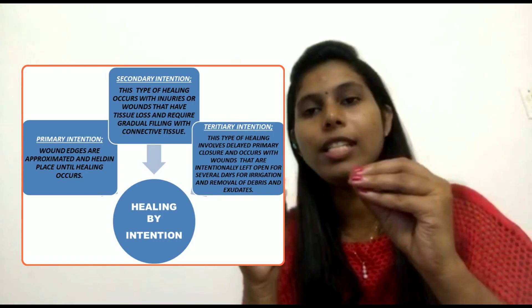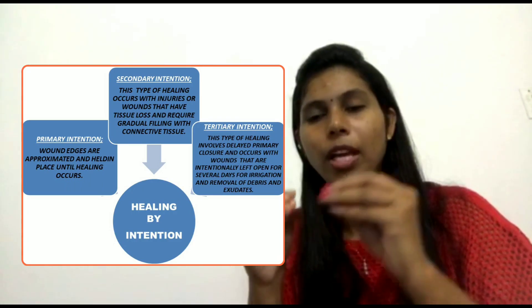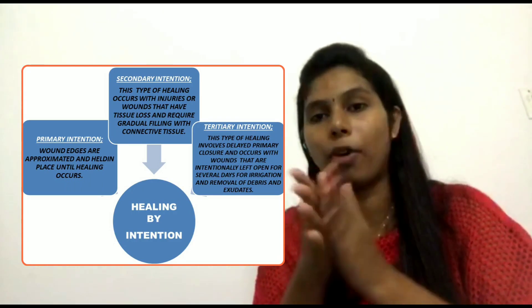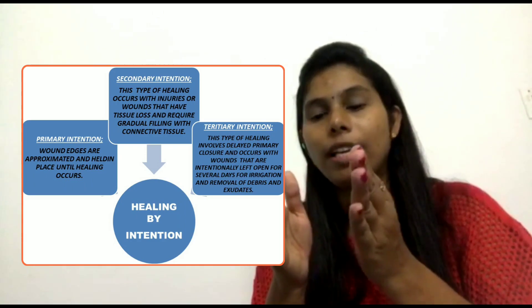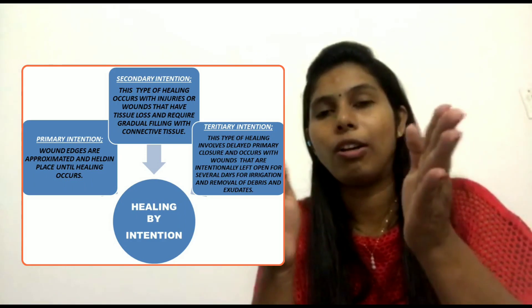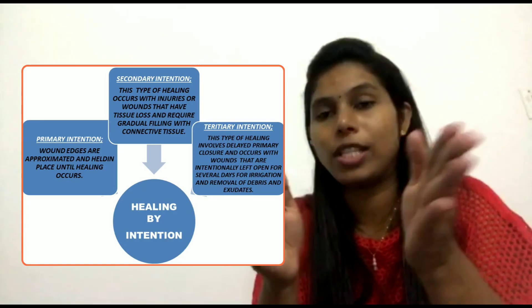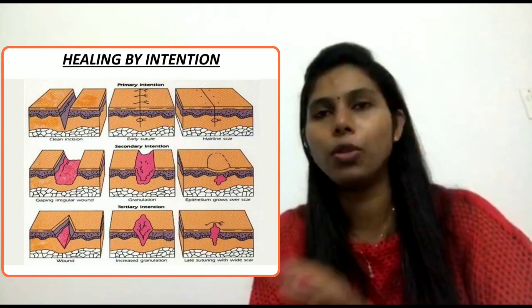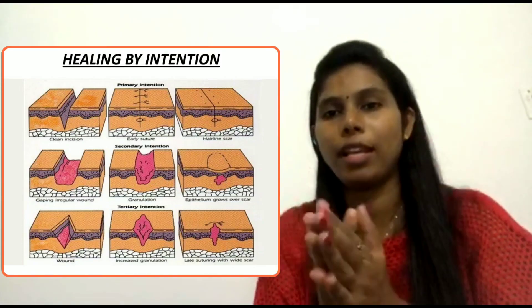This is easy compared to the other two types, because in this the wound margins or edges are approximated. So it will be easy to contract or come towards the center of the wound. You can see in this picture how the wound looks. That is called Primary Intention.